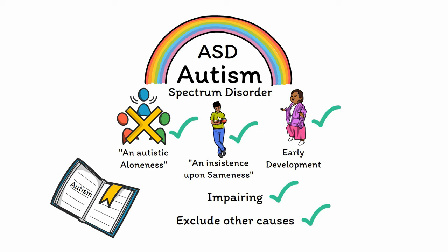Handily, you can pack the core diagnostic criteria directly into the acronym ASD itself. An autism spectrum disorder is defined by an autistic aloneness and an insistence upon sameness that are both present during early development.